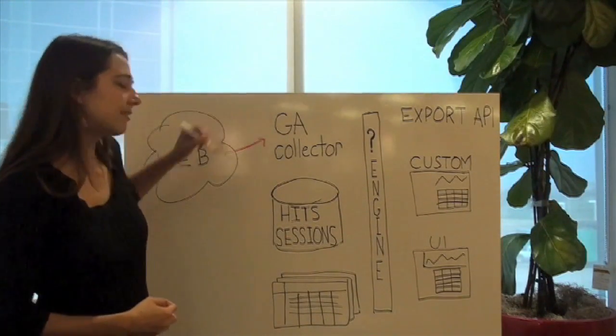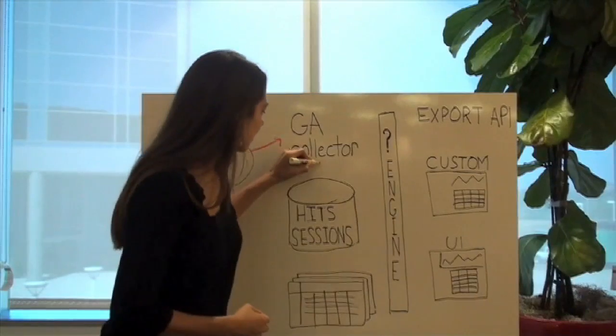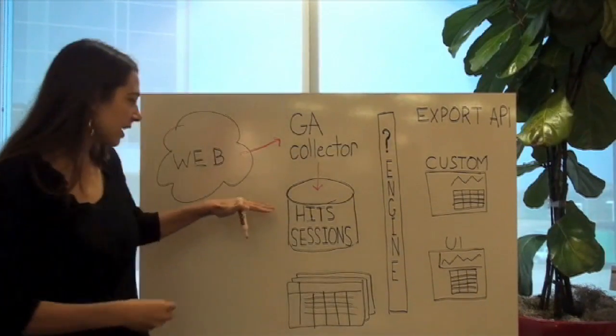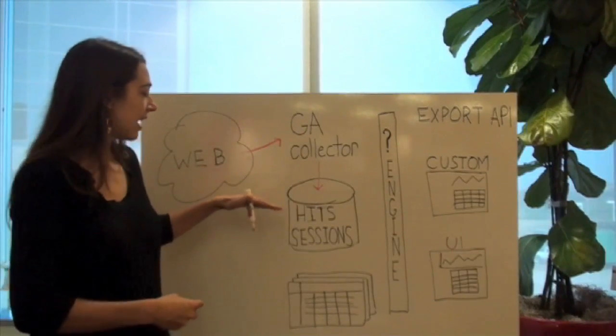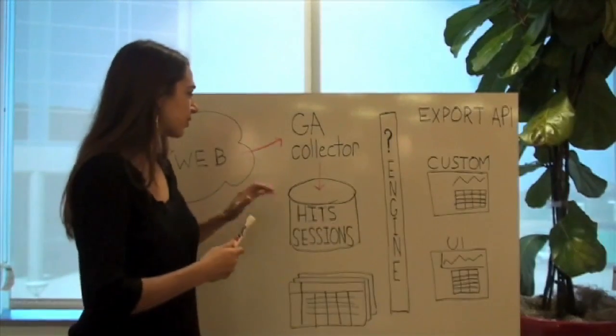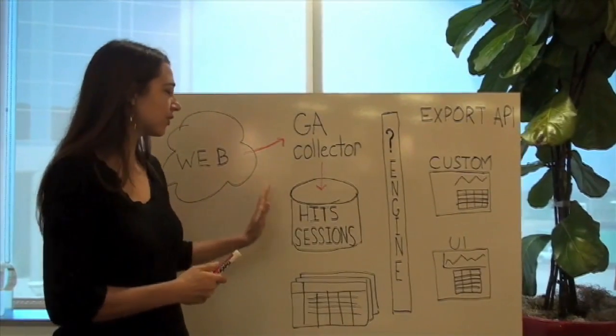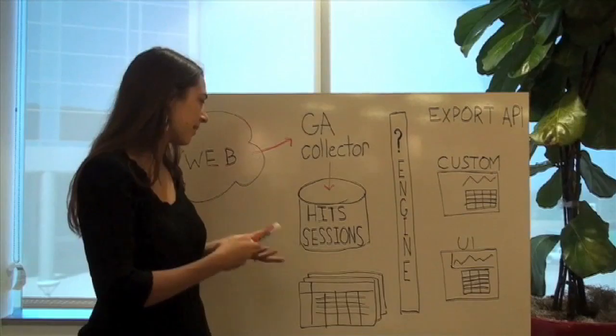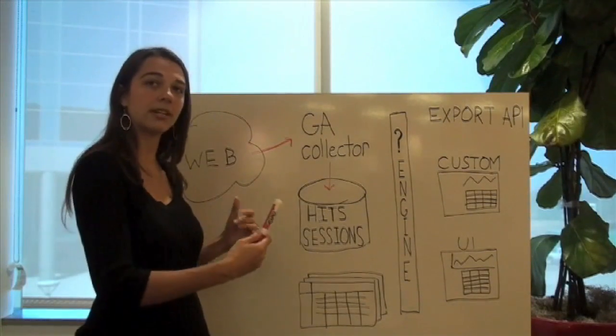The GA collector receives that information and it's going to store it in the form of the individual hits and the sessions, the periods of interactivity. And we're going to store that. You can think of it like a database, but it's stored in a way that is ideal for efficient processing and distributed computations.